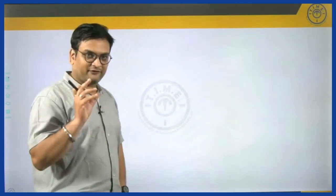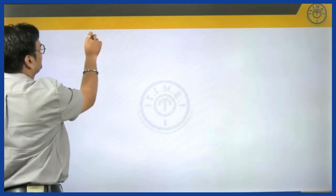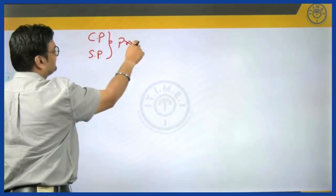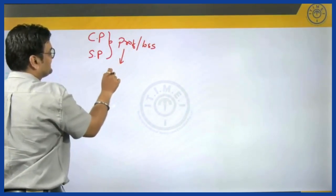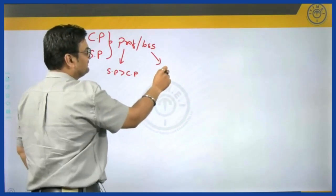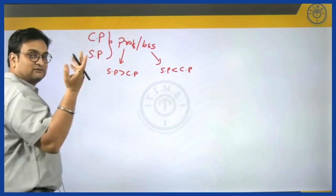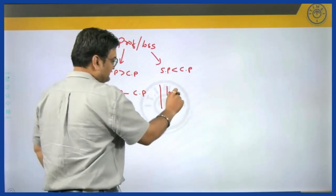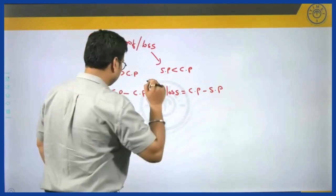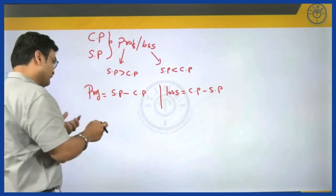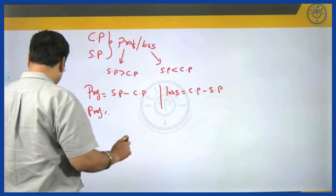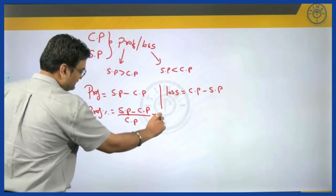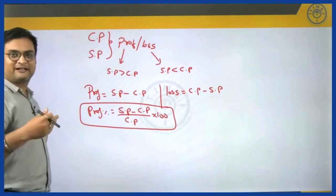In today's video, we shall be looking at profit and loss particularly. We understand what cost price is and what selling price is. The difference of these two is considered to be either profit or loss. Profit happens whenever selling price is more than cost price, and loss is incurred whenever selling price is less than cost price. So we can write profit as SP minus CP, whereas loss is CP minus SP. Profit percentage is calculated as profit upon cost price into 100.